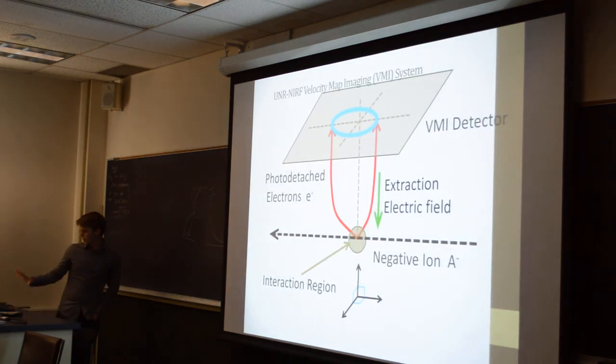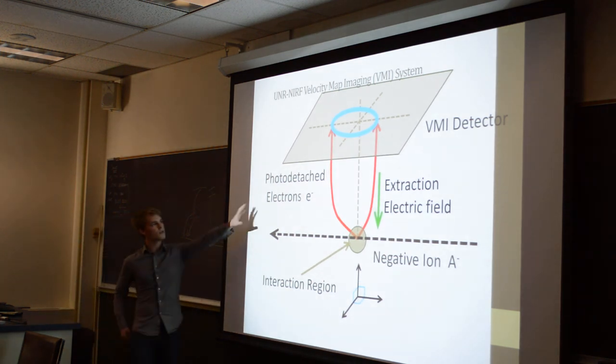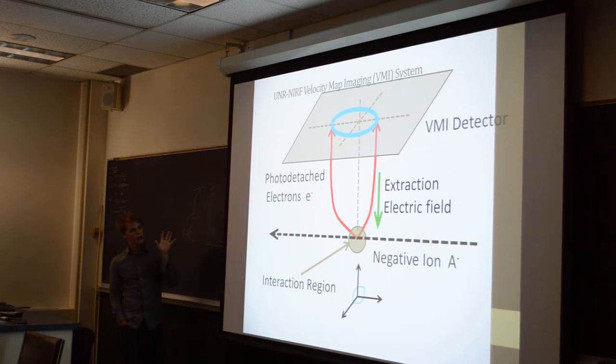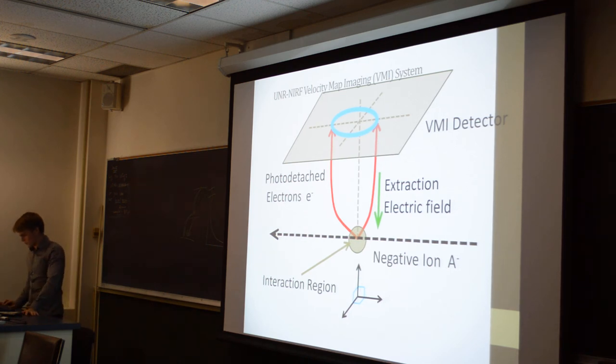So this is just a 3D view of what we should expect to see. The photodetached electrons are accelerated up, and they form this two-dimensional image on the detector, which then we have to take all the information from.